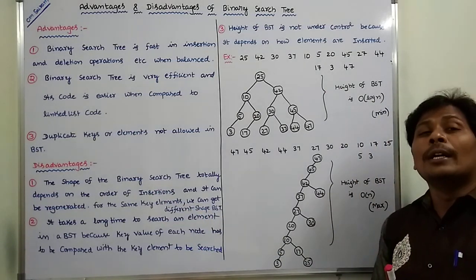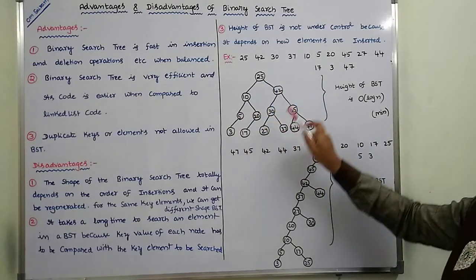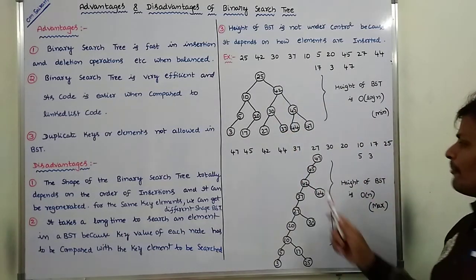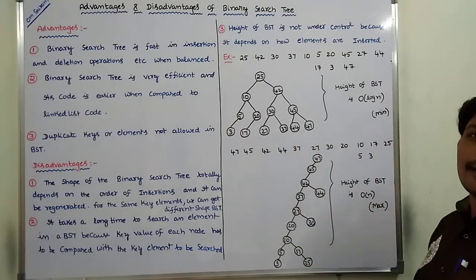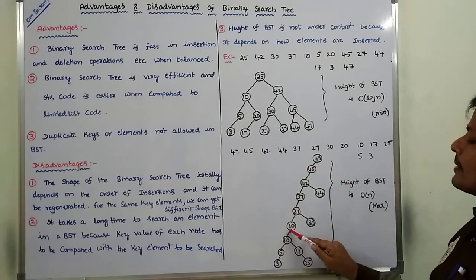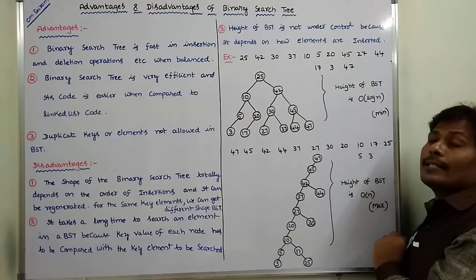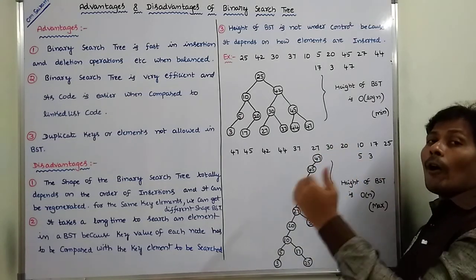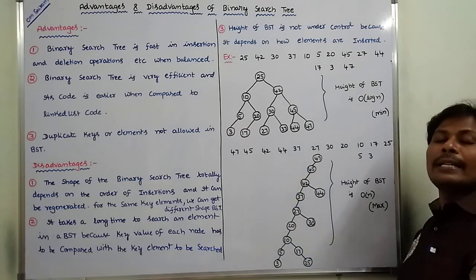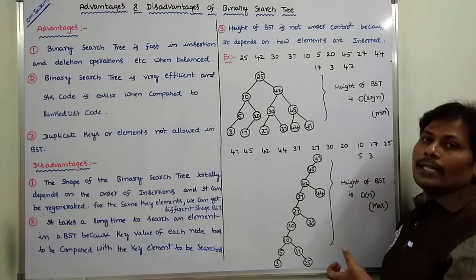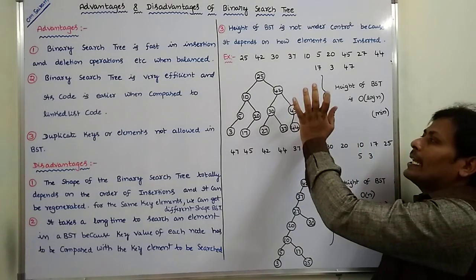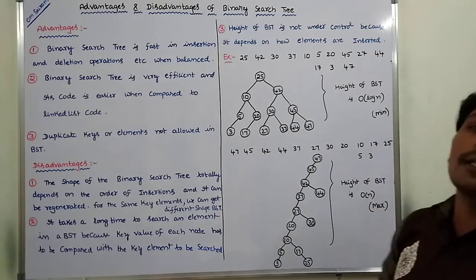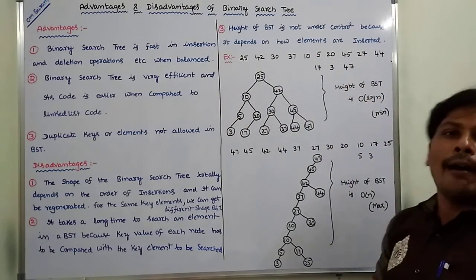We are getting different shapes, and here height is also changing. For the first tree the same 13 elements give height 1, 2, 3, 4 — height is 4. For the second tree, changing the order of insertions gives height 1, 2, 3, 4, 5, 6, 7, 8, 9 — height is 9. The height of the binary search tree is not under control because it depends on how elements are inserted.